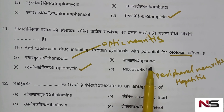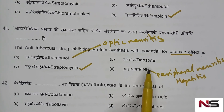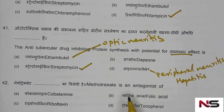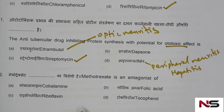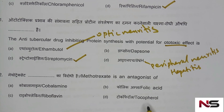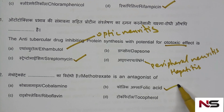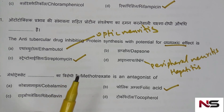Dapsone causes hemolytic anemia in case of G6PD deficiency. Question 42: Methotrexate is an antagonist of which drug? Options are: cobalamin, folic acid, riboflavin, thiamine. The correct answer is option B — folic acid.